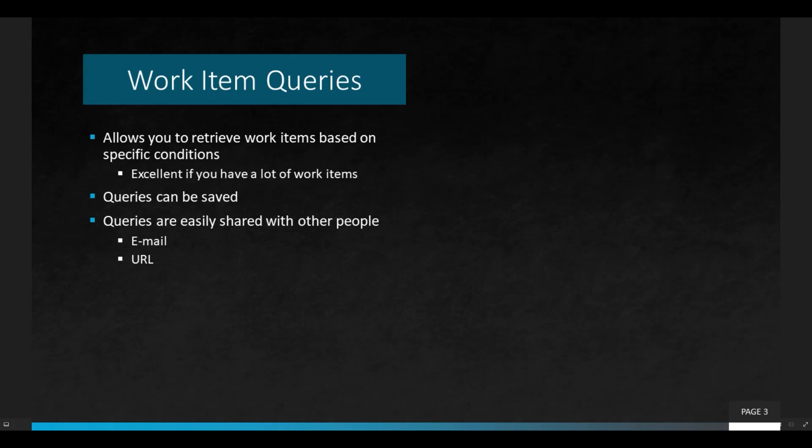The work item queries section allows you to retrieve work items based on specific conditions. This is excellent to use if you have a lot of work items in your backlog — things you've completed and things you've planned — and you want to narrow it down to see only things related to a specific topic. You can create a query and save it so you don't have to rewrite it again.